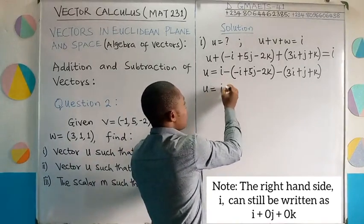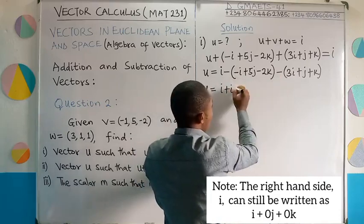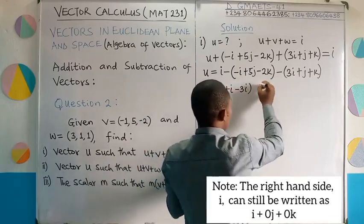So let's do that and see. This is going to give us i. Minus minus this will give us plus i. Then coming over to this, we have -3i. So this is the first term we've got there. Plus.